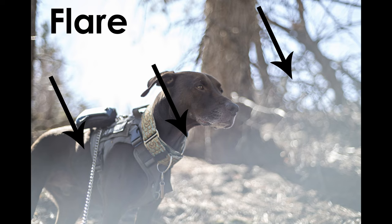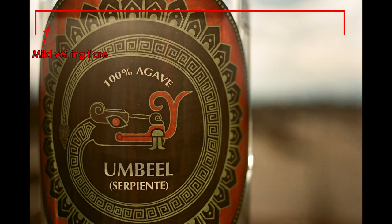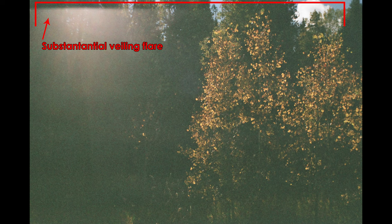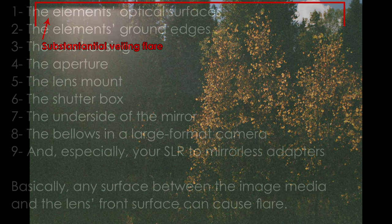Flare causes a white or lighter-toned area over some or all of the image, and that area reduces contrast and sharpness. According to reference B in the description, veiling flare occurs when light reflects off the lens or other elements such as the lens barrel and mirror box, making part or all of an image appear soft or hazy. So flare could be localized, or it could cover much, if not all, of the entire image.